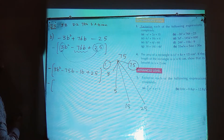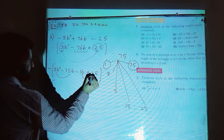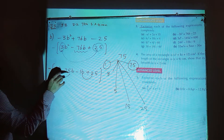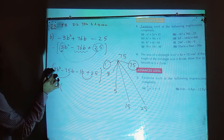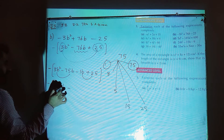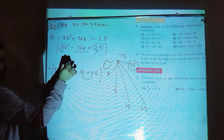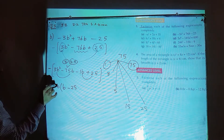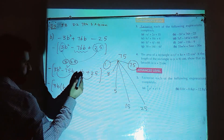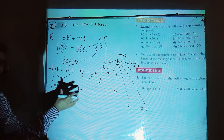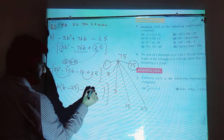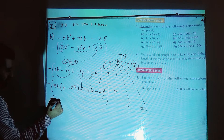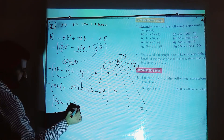Now pick common factors from the first two and last two terms. From the first two, 3b is common: 3b(b minus 25). From the last two, taking out minus 1: minus 1(b minus 25). So the factors are (3b minus 1)(b minus 25). We still have a negative sign outside, so multiply it with (3b minus 1): minus 1 times 3b is minus 3b, minus 1 times minus 1 is plus 1. One factor becomes (minus 3b plus 1) and the other is (b minus 25).